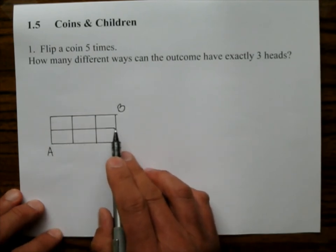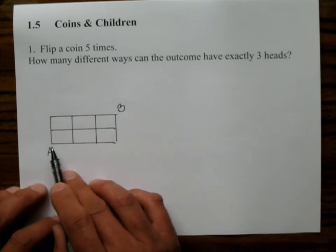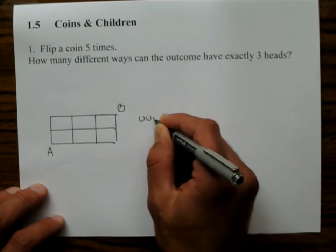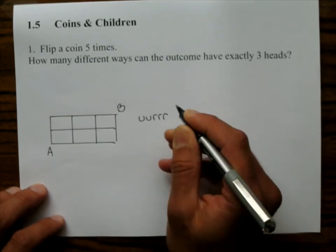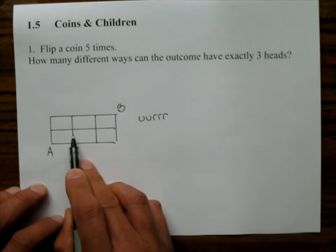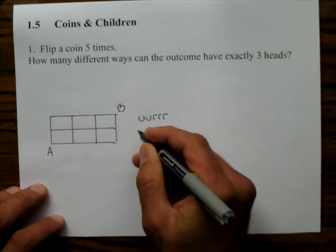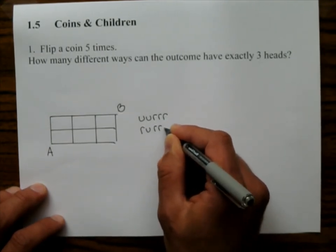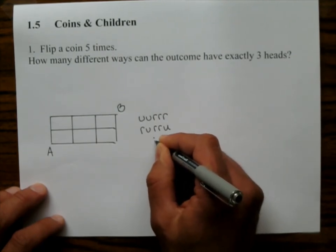And what you would do is you would say a direct route would be like let's just say up, up, right, right, right. Another direct route would be maybe you can go to the right first and then up. So that's right, up, right, right, up. And the list goes on.